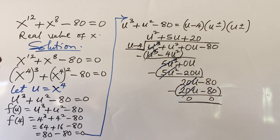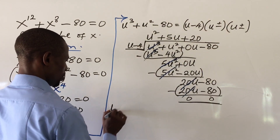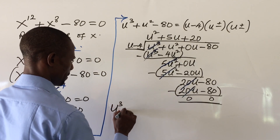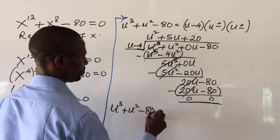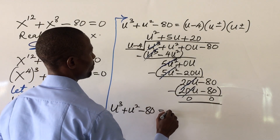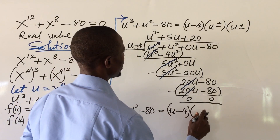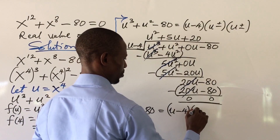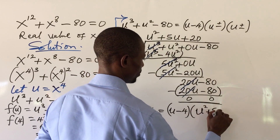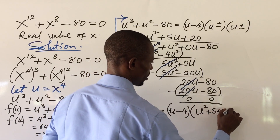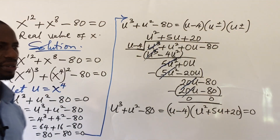So our equation factors as: u cubed plus u squared minus 80 equals (u minus 4)(u squared plus 5u plus 20) equals zero.